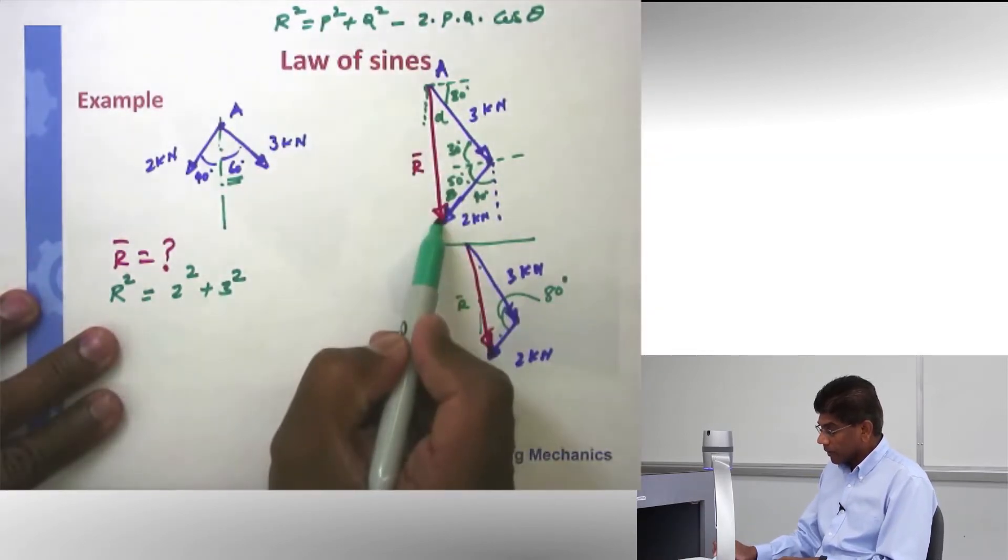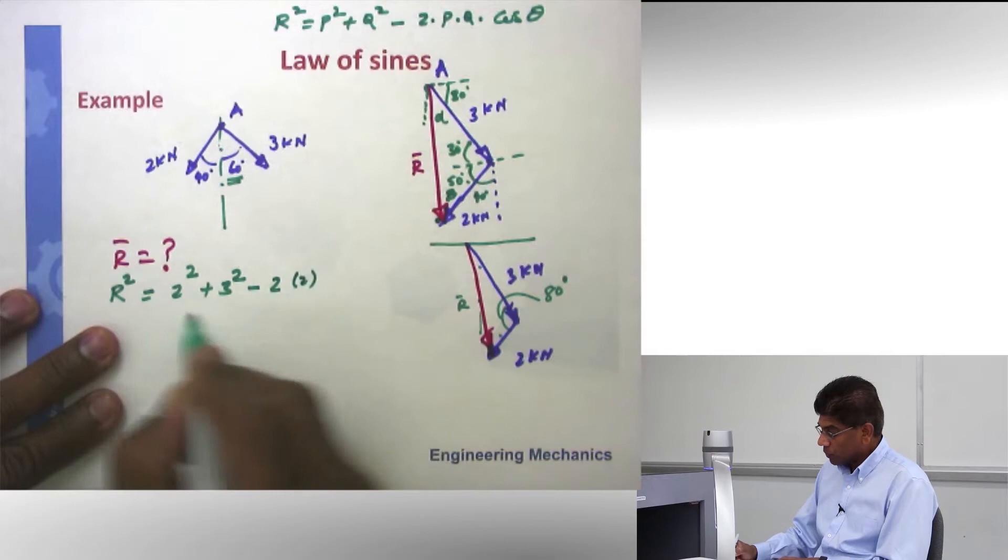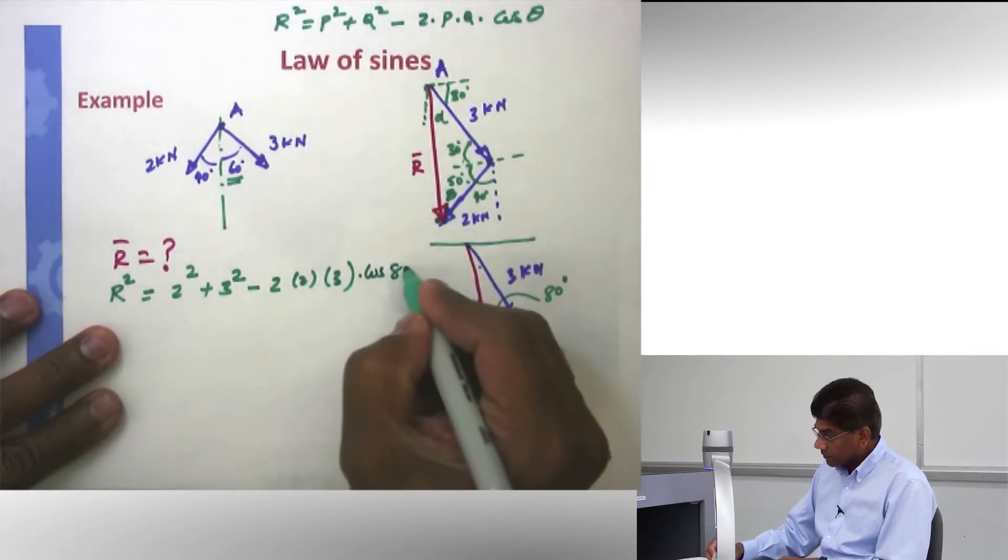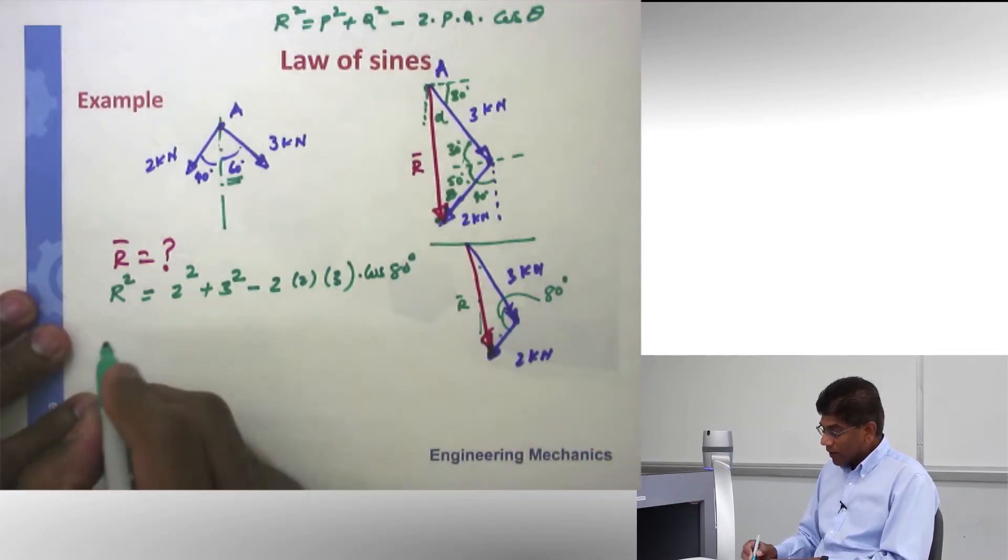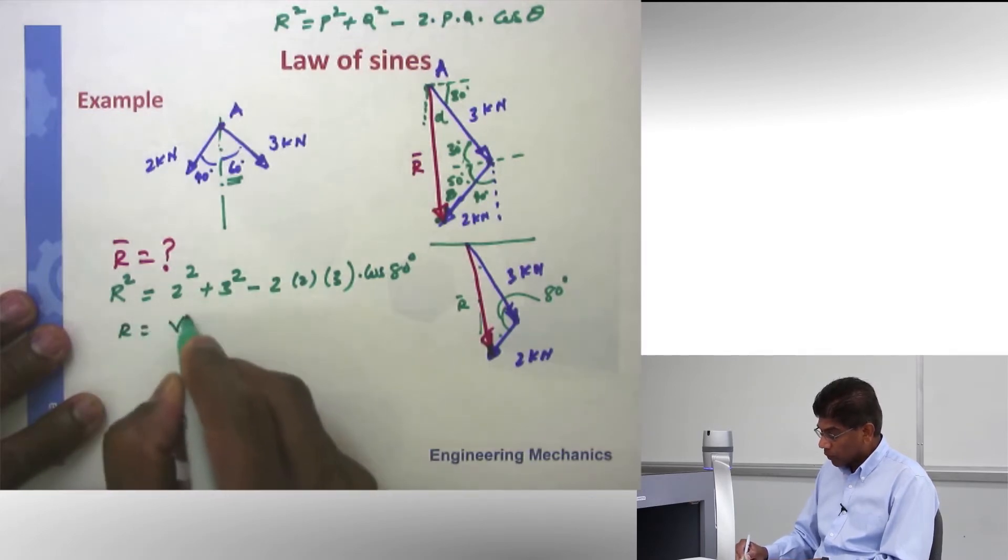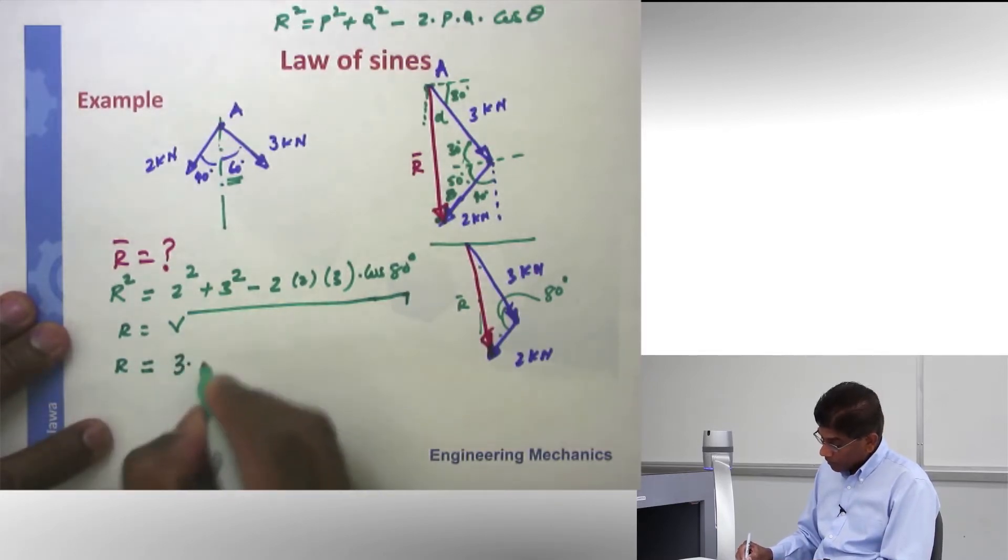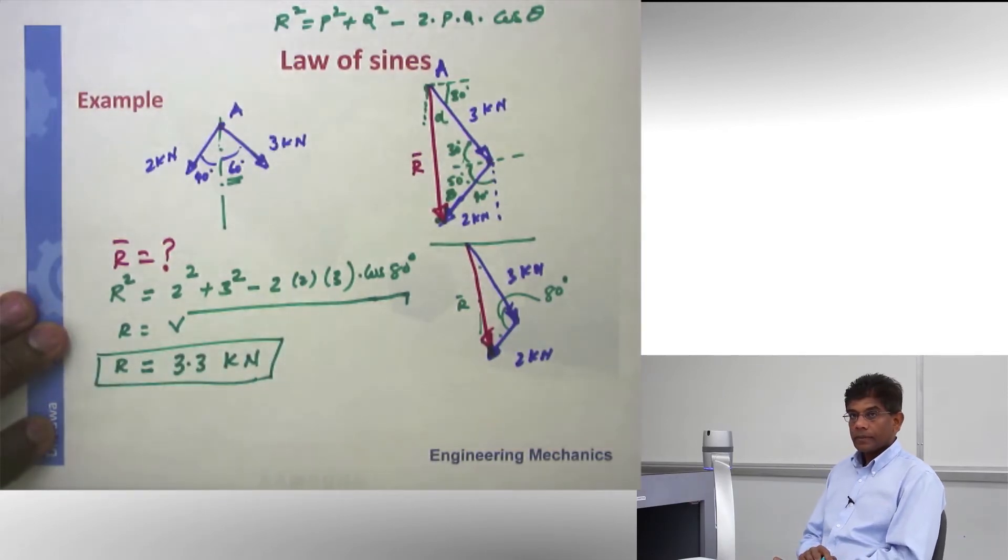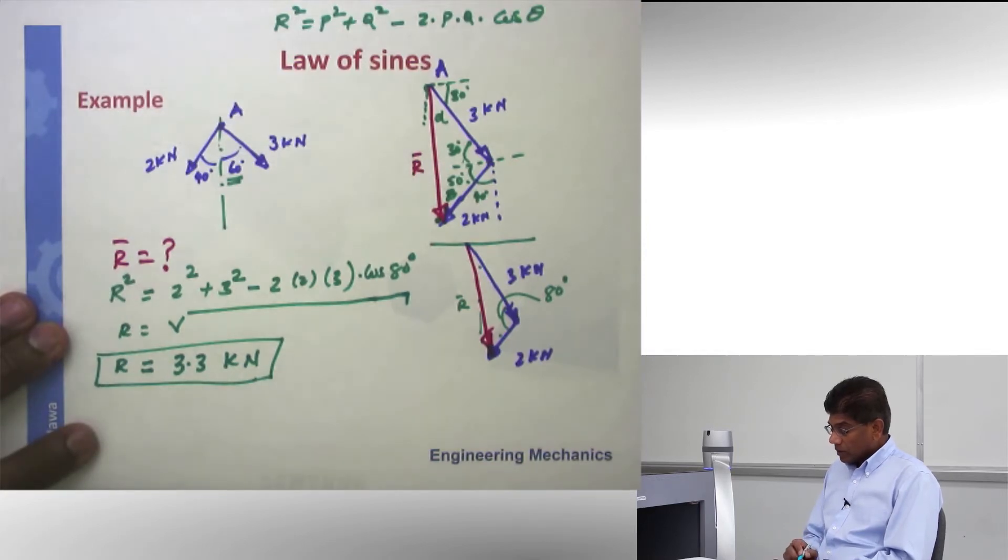R squared equal to 2 squared plus 3 squared minus 2 times 2 times 3 times cosine 80 degrees. And that's what this 80 degrees is. Now this is something very easy to evaluate. And once we evaluate, we have to take the square root of that. R would be the square root of all of this. And if I did that, my vector R happens to be 3.3, and make sure you give the units at the final answer, kilonewtons. You can verify this by yourself by solving using this formula. So we got the resultant vector's magnitude. What is missing here is the direction.